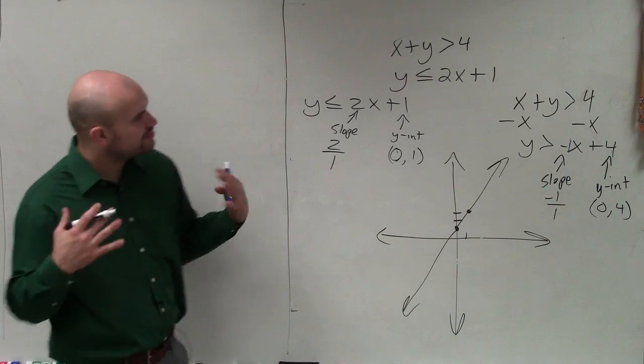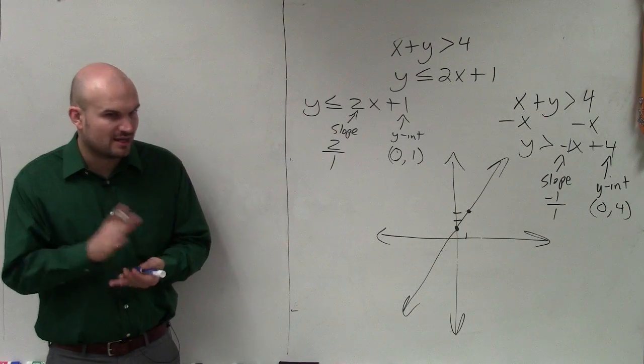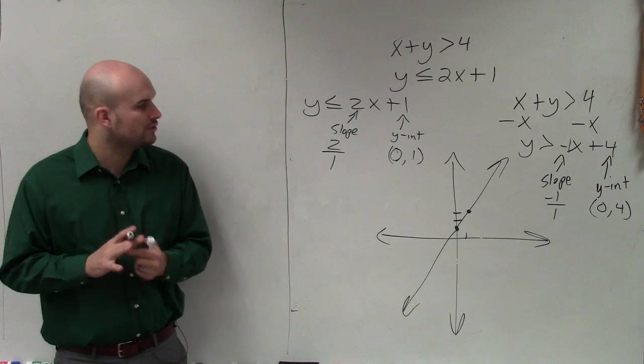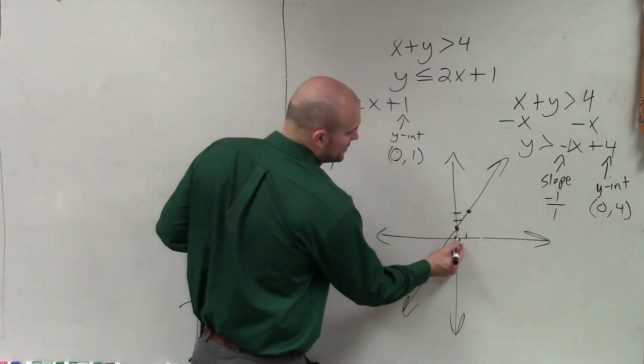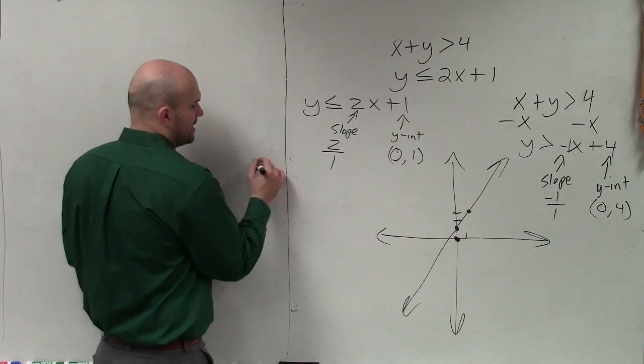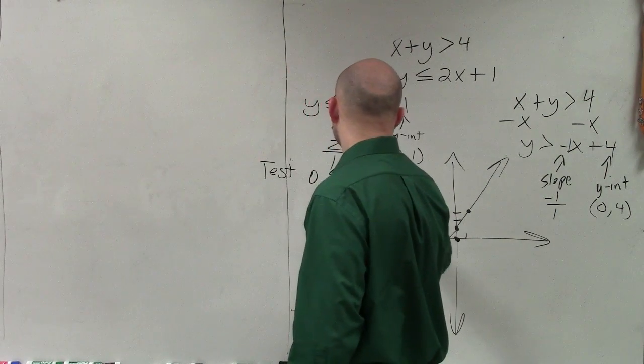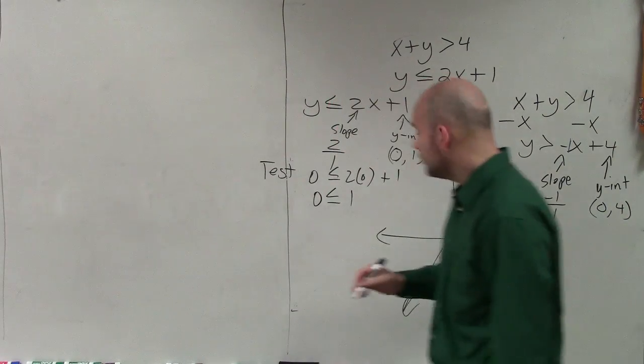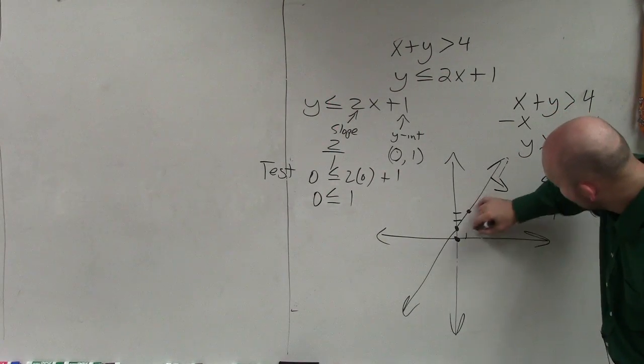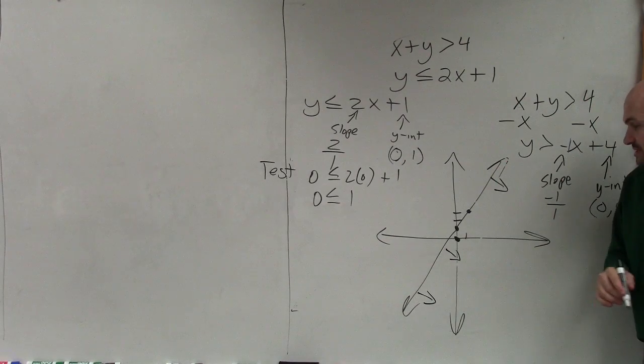Whenever I'm doing two inequalities or more, rather than shade, I like to use arrows and then shade only the feasible region. The next thing I'm going to do is use my test point, which is 0, 0 in this case. I'll plug 0 in for y and 0 in for x, and I get 0 is less than or equal to 1, which is true. That means I'm going to shade towards my test point, because 0, 0 is true in this case.